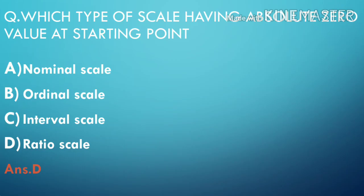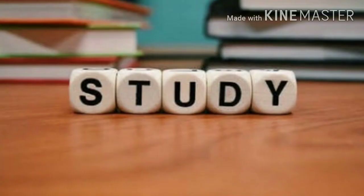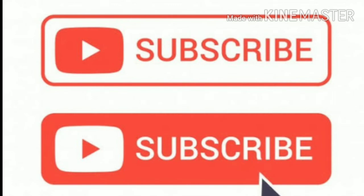Question three: What type of scale has an absolute zero value as the starting point? Options: nominal scale, ordinal scale, interval scale, and ratio scale. The answer is option D, ratio scale. In ratio scale, the variable can be categorized, ranked, and expressed in equal intervals and can have an absolute zero value — that is, the starting point of the scale is taken as zero. With this note, we are concluding. Till my next video, keep on preparing for your exam. If you like this video, please click on the like button and subscribe for more videos. Thank you.